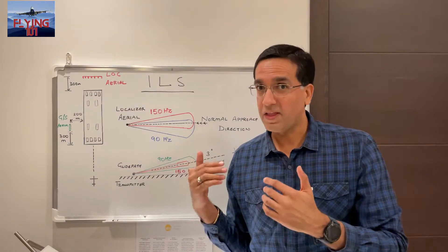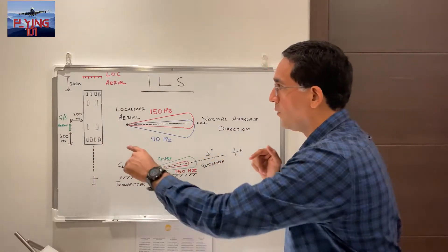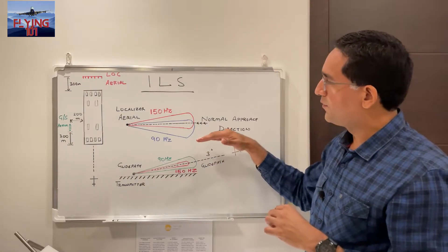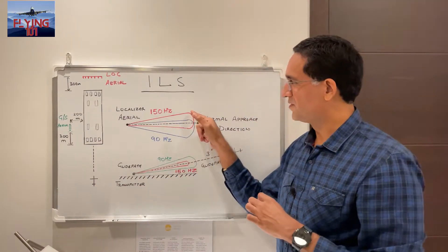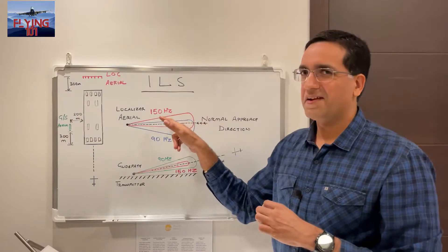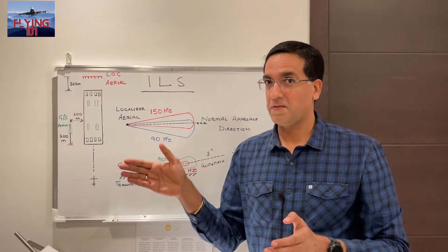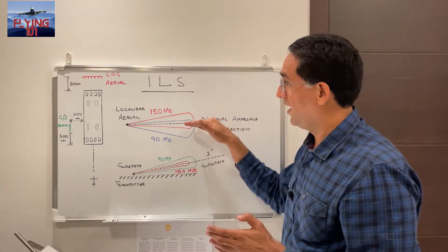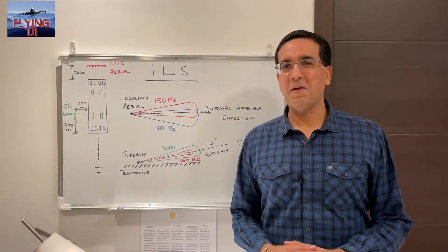The receiver interprets the aircraft's location relative to the extended centerline — the point where both lobes meet. If the aircraft is to the left of the runway, it receives more of the 90 Hz signal; if it's to the right, it receives more of the 150 Hz signal, and the cockpit indication tells the pilots to fly left to return to the extended runway centerline, represented by the dotted black line.